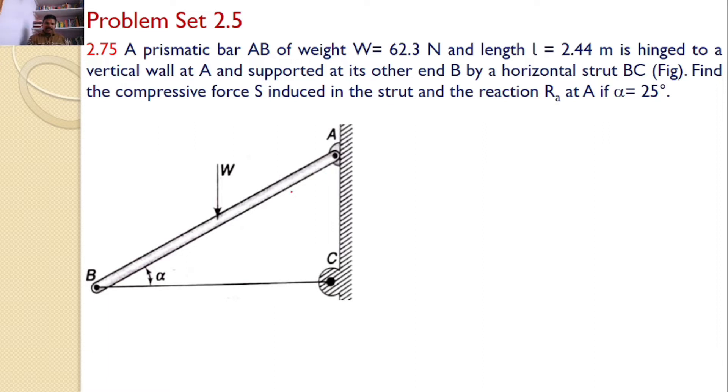Let us consider the free body diagram of AB. What are the various forces acting on AB? Now here I can find a hinge. The hinge will introduce two reactions. The first reaction is horizontal reaction, its value is RAH, and this vertical reaction is RAV. We are assuming it in the downward direction. You can also assume in the upward direction and you can proceed.